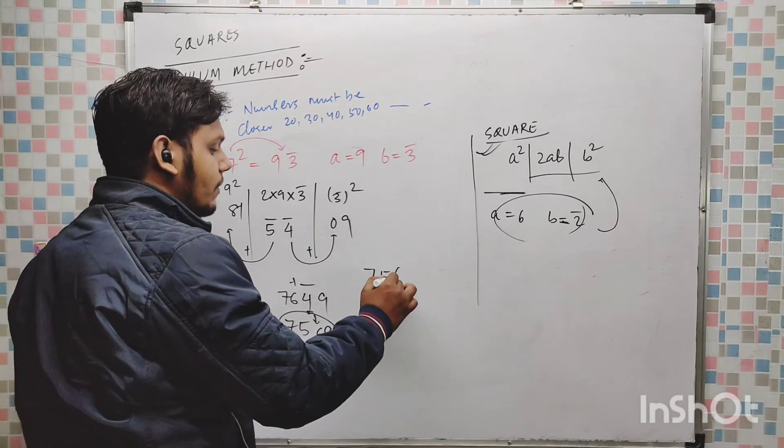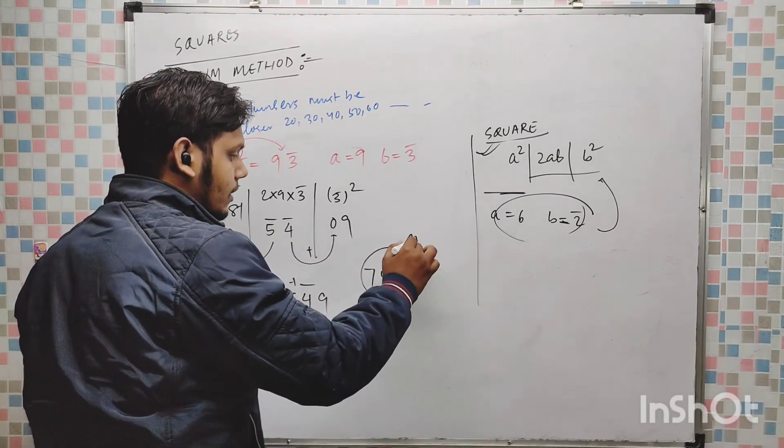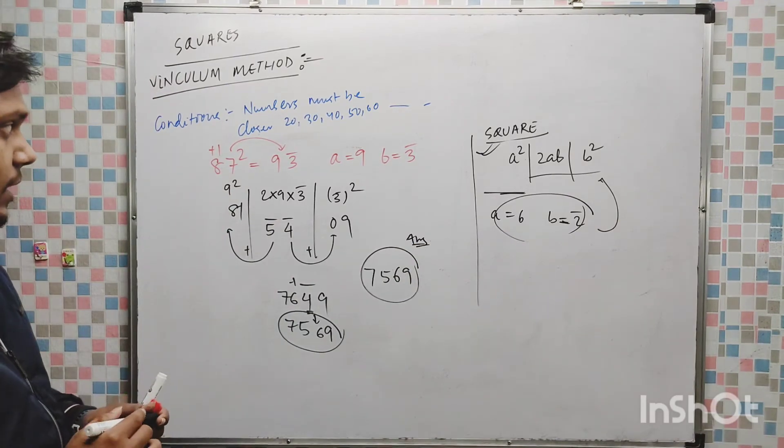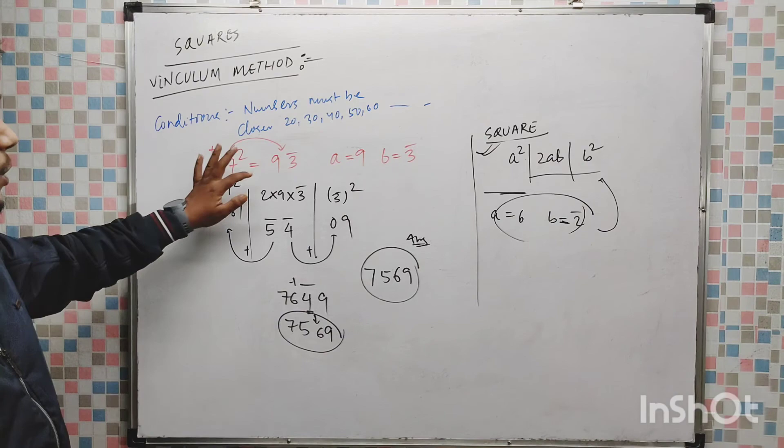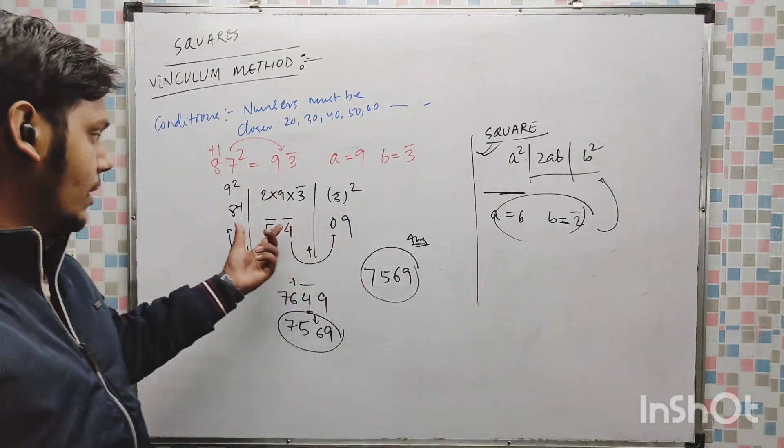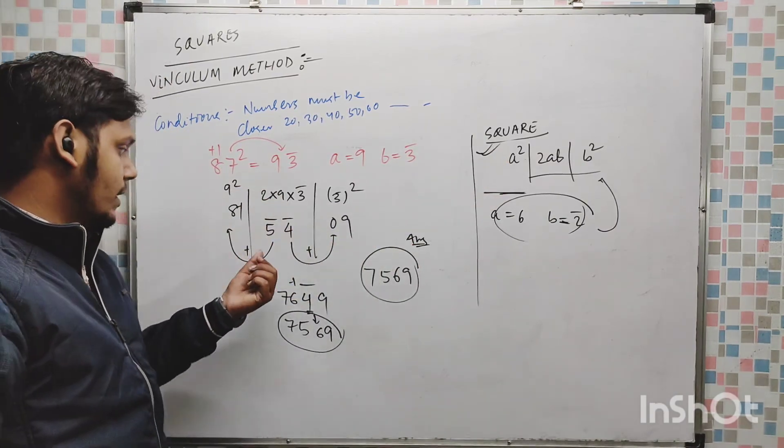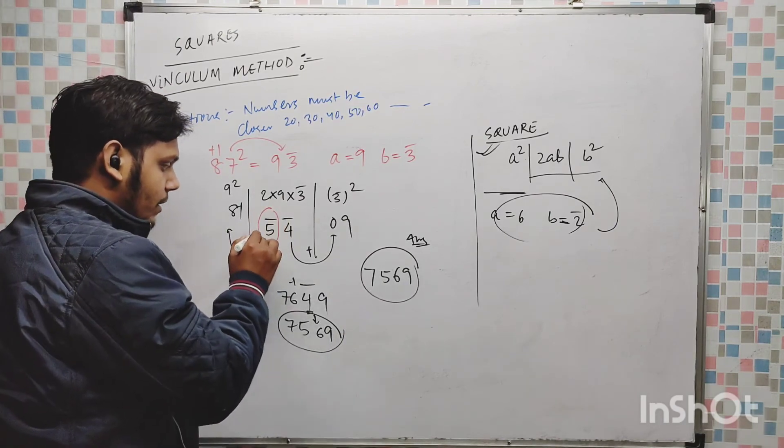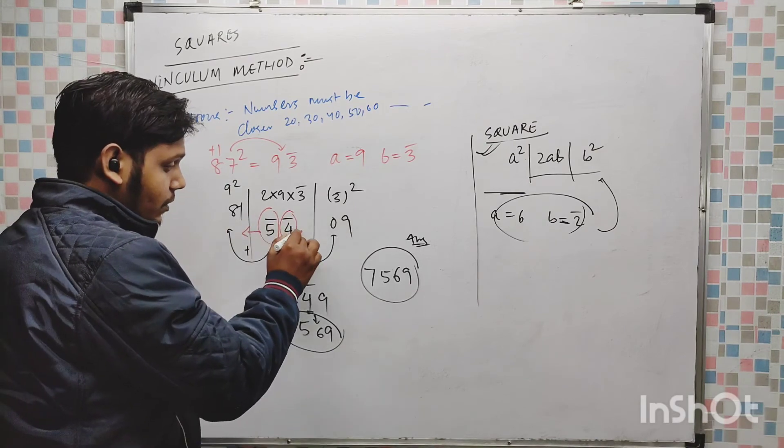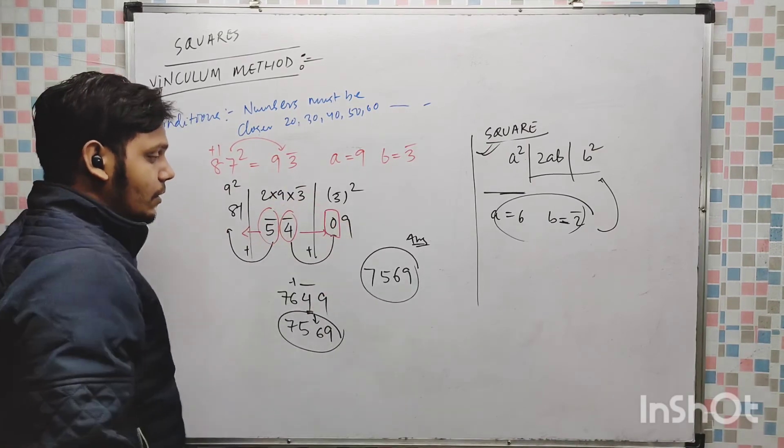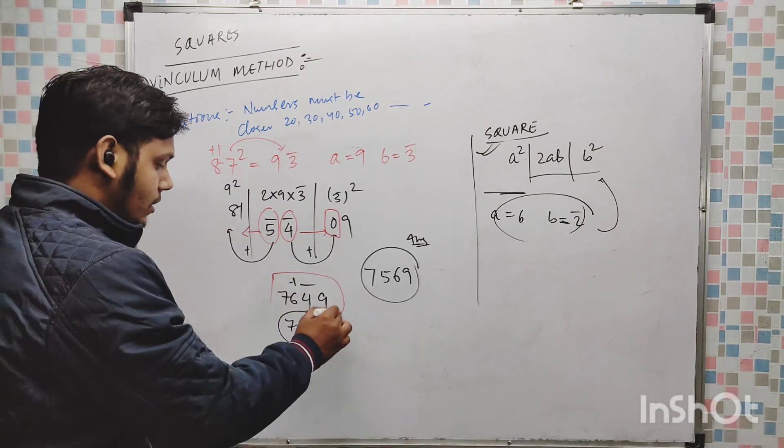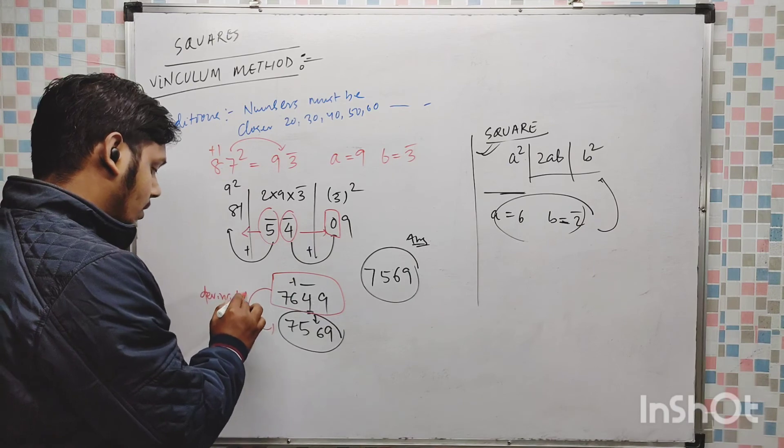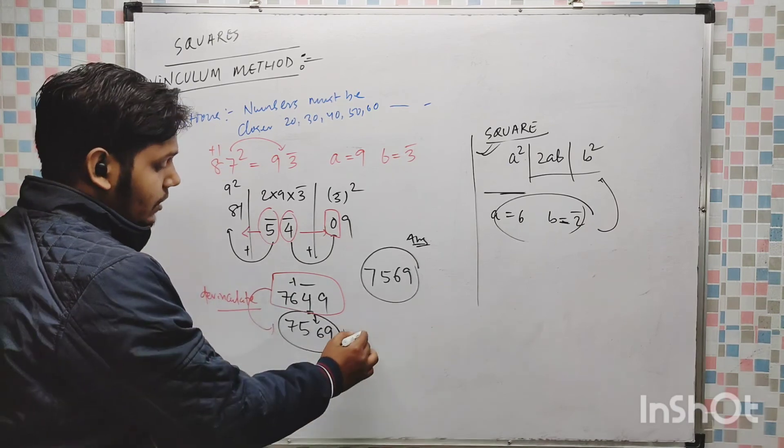So the answer is 7569. So by using the vinculum method you can find out the square like this. Take out the vinculum number, thereafter put in this formula and thereafter you have to balance it. This digit will be added to this, this digit will be added to this. Now what you have got, you have to devinculate, and here the answer is that.